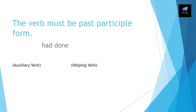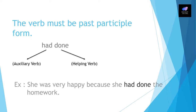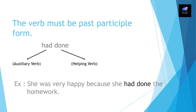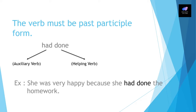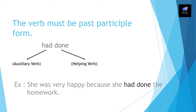When you write sentences using past perfect tense, you use the past participle form. Take a look at the same example: she was very happy because she had done the homework. The verb 'done' is the past participle form. As you know, the verb is 'do,' the past tense is 'did,' and the past participle is 'done' — do, did, done. 'Had' is an auxiliary verb and 'done' is the main verb.